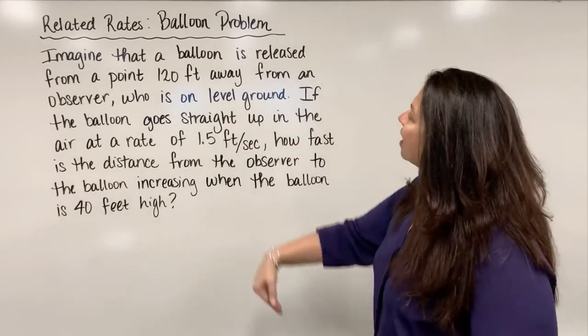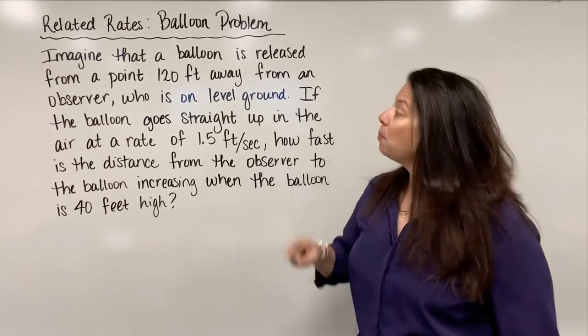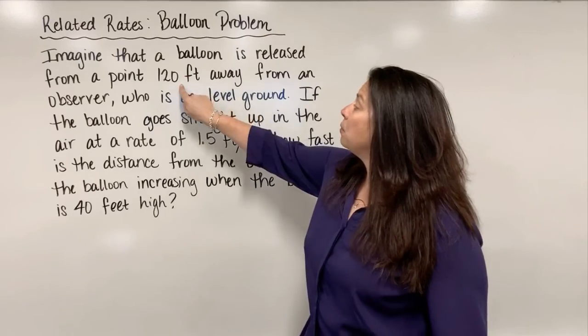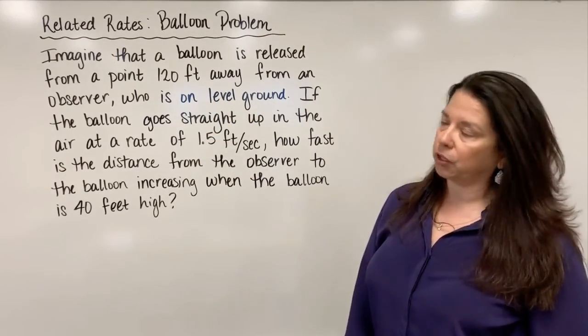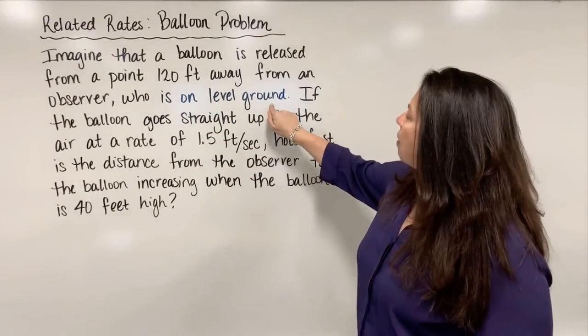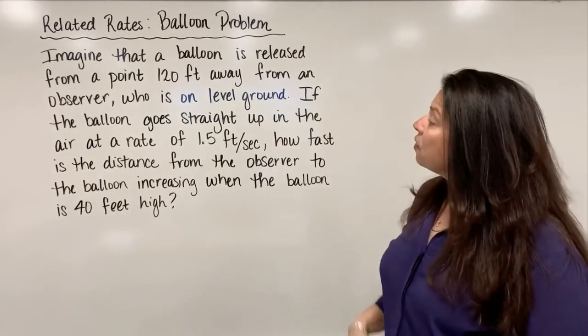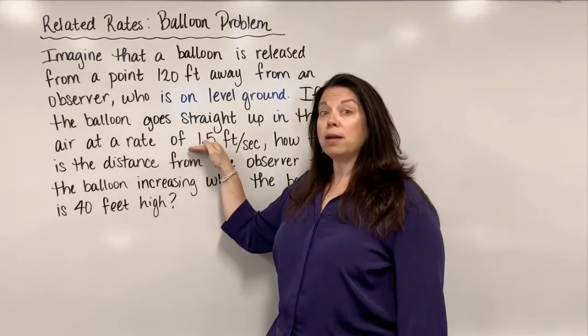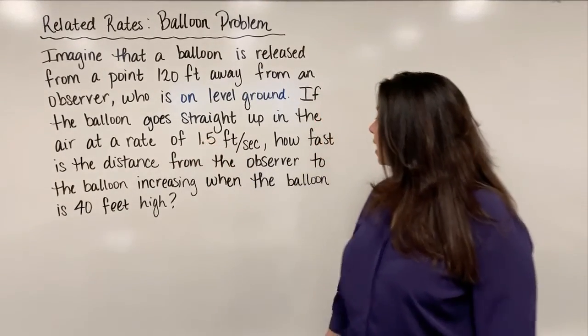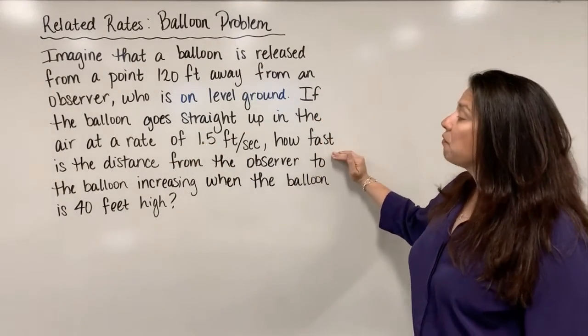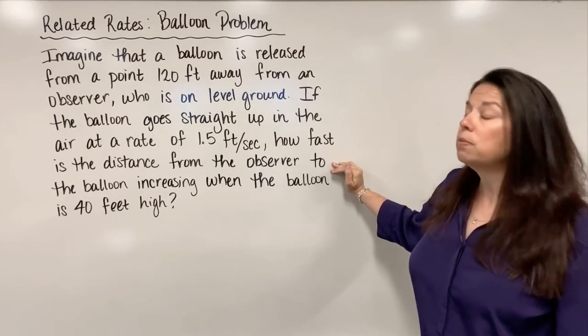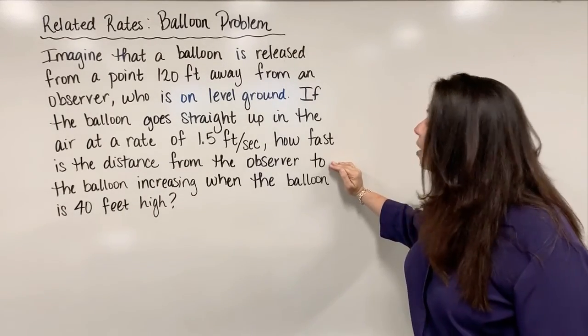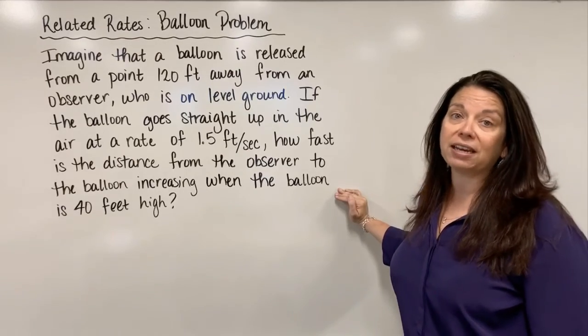Imagine that a balloon is released from a point that's exactly 120 feet away from an observer, and that observer is on level ground. If the balloon goes straight up in the air at a rate of 1.5 feet per second, we want to know how fast is the distance from the observer to the balloon increasing when the balloon is 40 feet high.